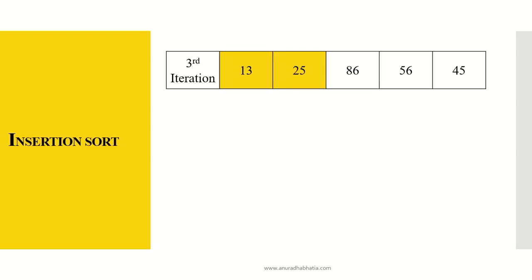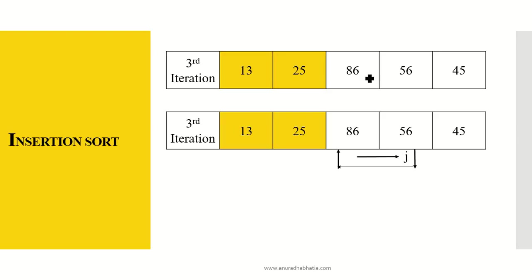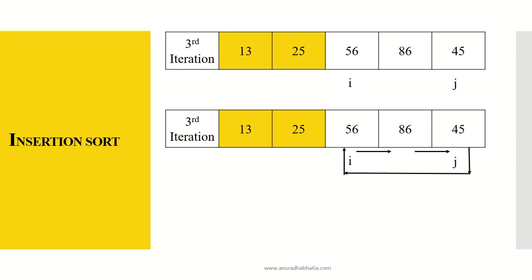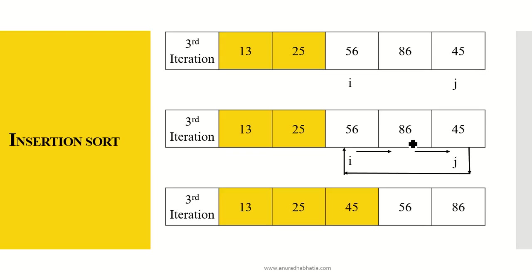This becomes the input to the third iteration. Now i is at 86. 86 compared with 56 — these are two consecutive elements, so this looks like a simple swap, but we implement the insertion sort shift. Then 56 and 45: 56 is greater than 45, so there will be an exchange. 45 moves to the location of 56, 86 to 45, and 56 to 86. After the third iteration, the elements become 13, 25, 45, 56, and 86.